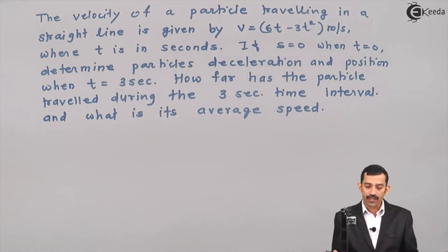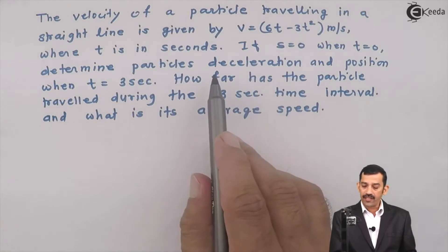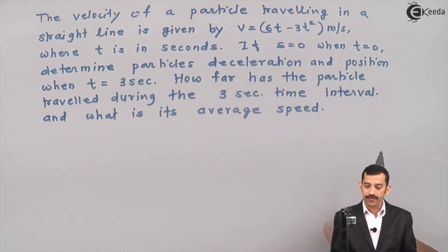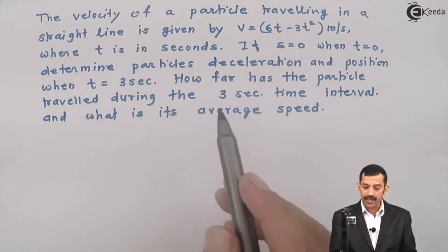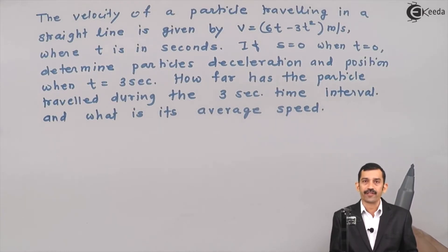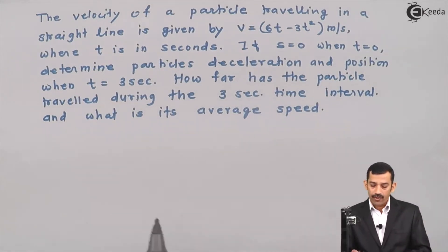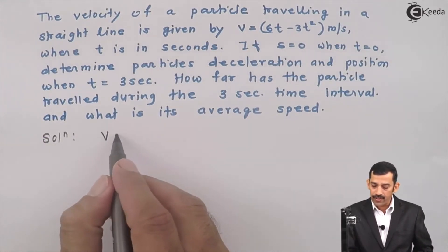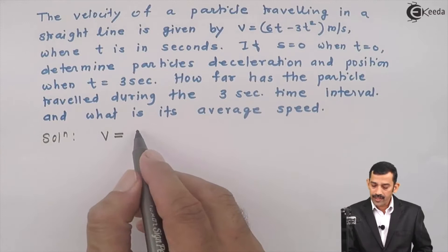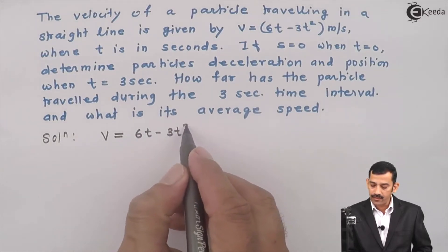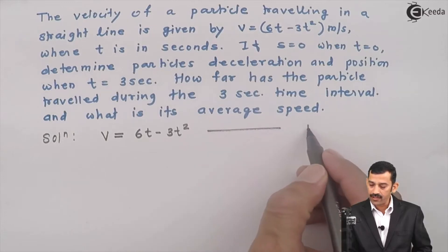The third part asks for the average speed. So in total, three parts need to be solved. The given equation of velocity is v = 6t minus 3t², which we call equation number 1.